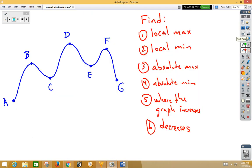Let's take a look at one more picture. Notice this is more of a generic picture, but that's okay. We can still answer the same sorts of questions. The local maximums would be where it turns at B, D, and F.